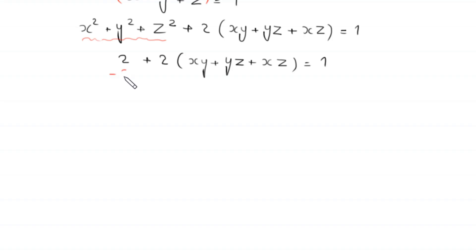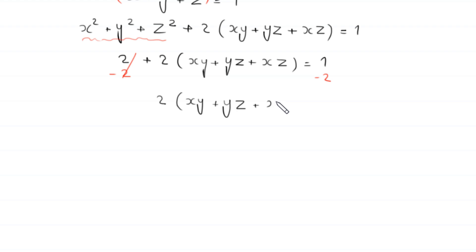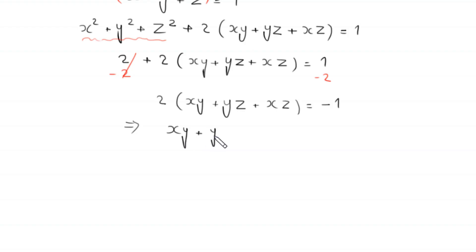Now we subtract 2 from both sides. This gets cancelled and we are left with 2 times (xy plus yz plus xz) is equal to 1 minus 2, which is negative 1. And if we divide both sides by 2, this implies that xy plus yz plus xz is equal to negative 1 over 2.